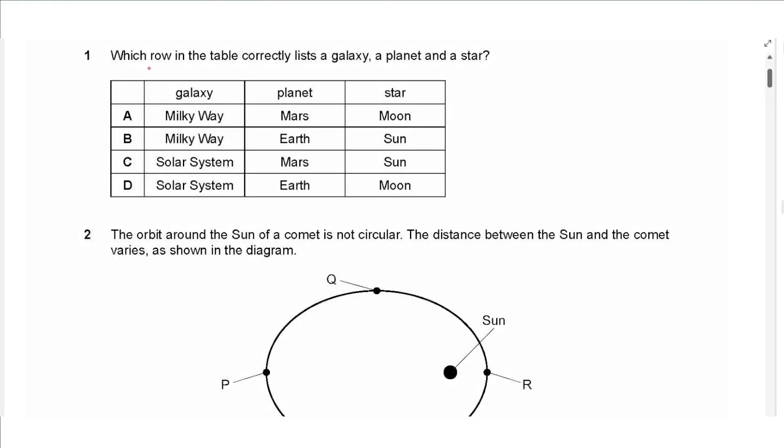The first question says, which row in the table correctly lists a galaxy, a planet and a star? The Milky Way is a galaxy. The solar system is not a galaxy, it's a cluster of planets around a star in the middle of the Milky Way. Mars, Earth, all these are planets. A star is the sun, not the moon. So the answer is B.